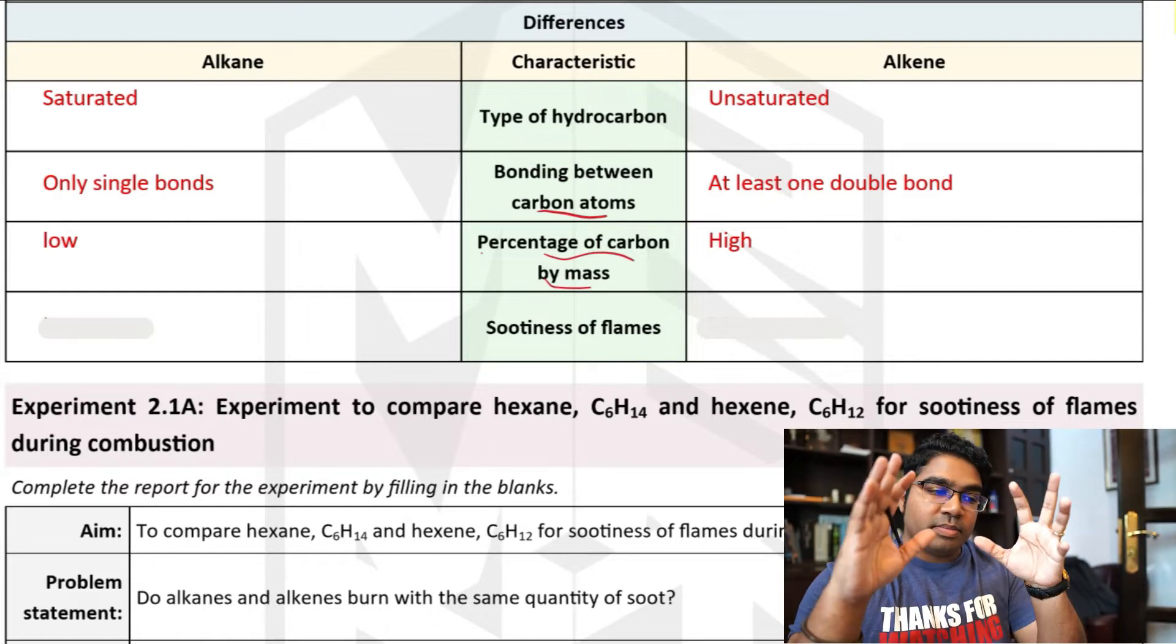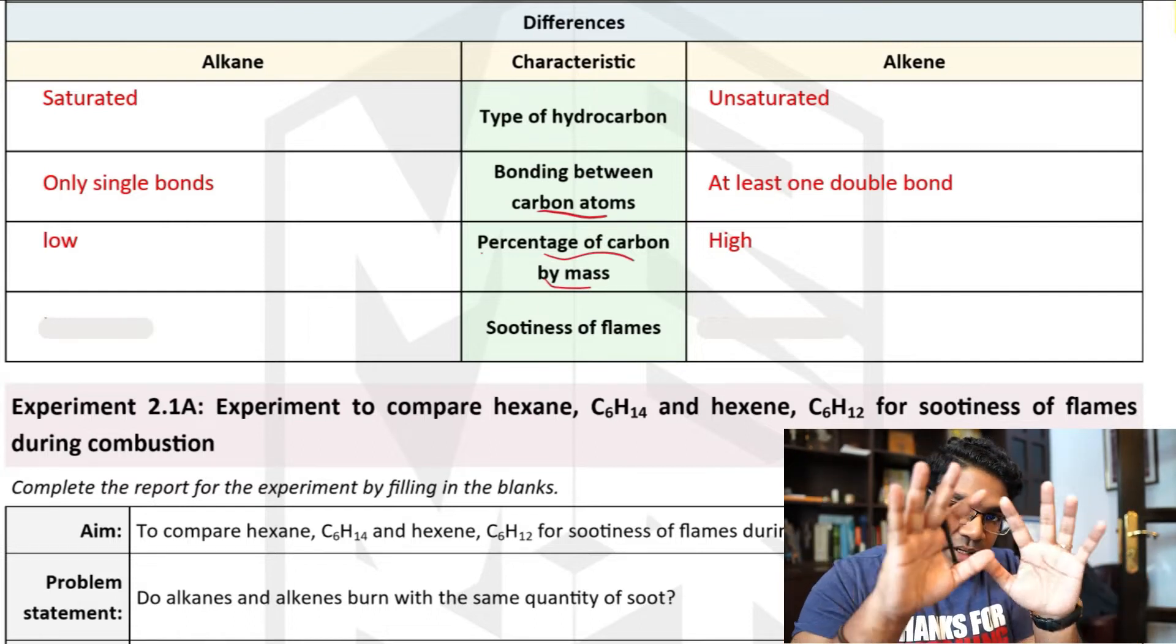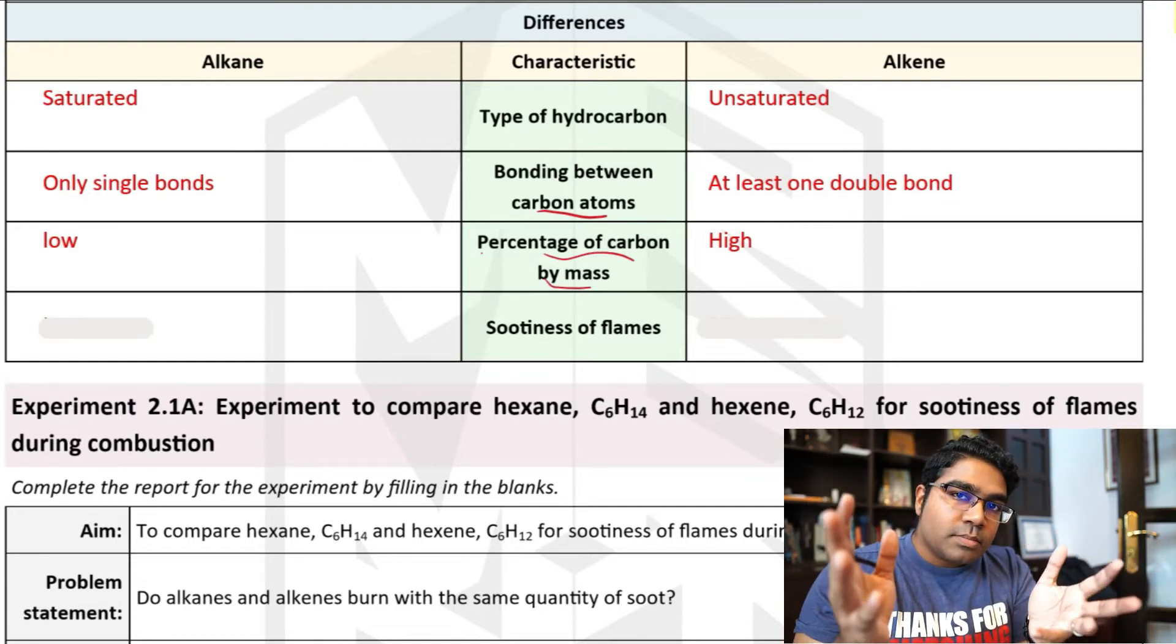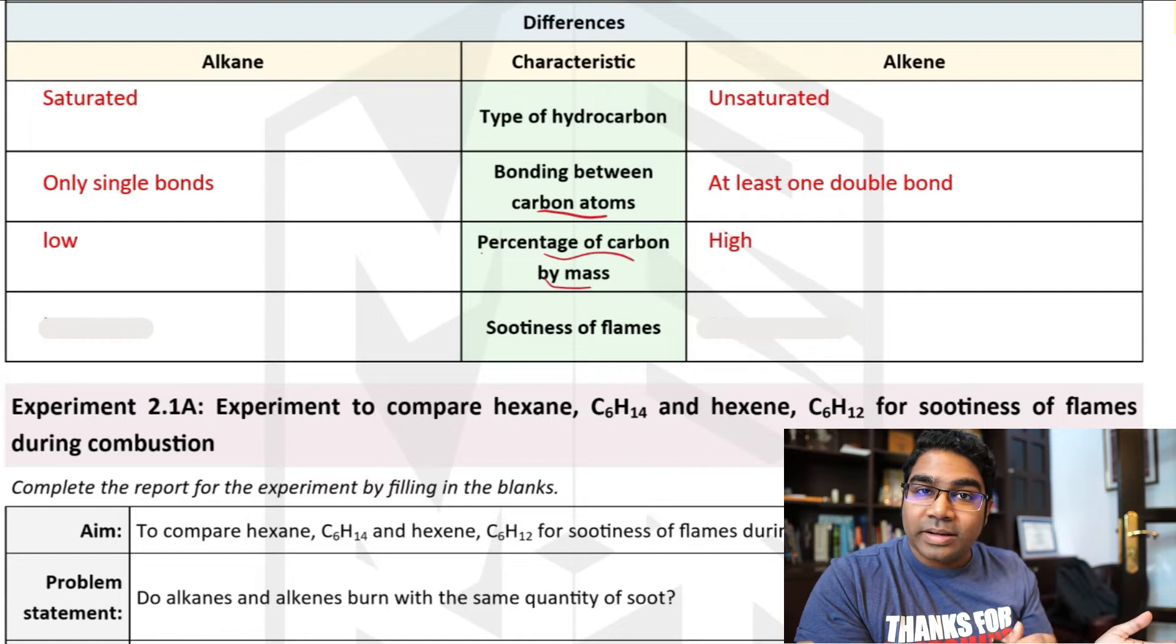This means if we take the mass of carbon in the whole molecule, in a single molecule, alkenes have more carbon by mass in the whole molecule compared to alkanes.